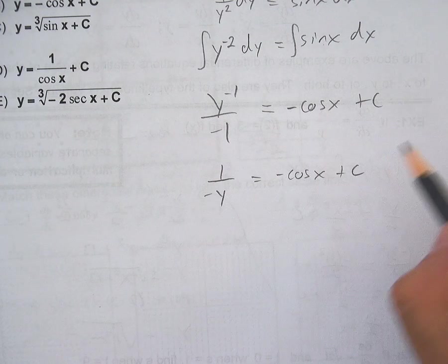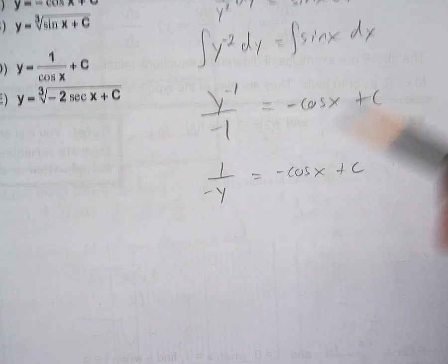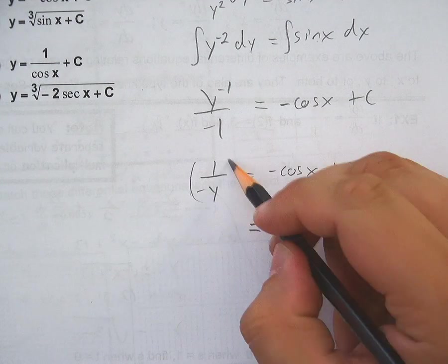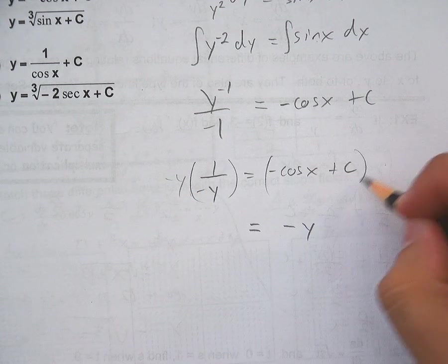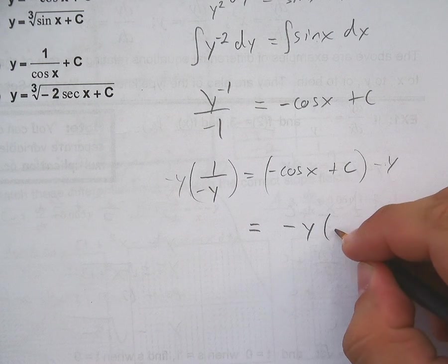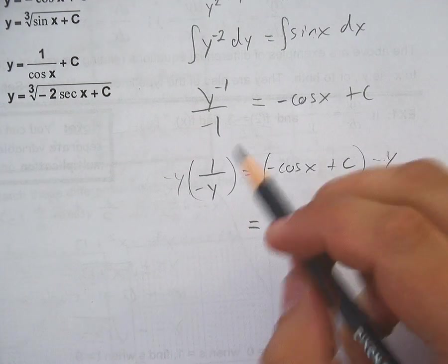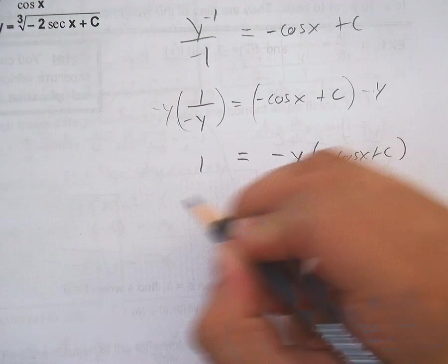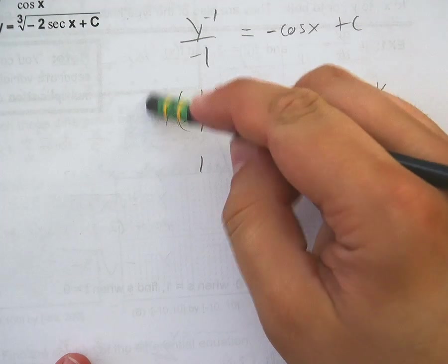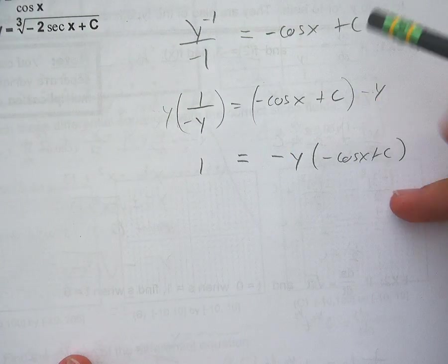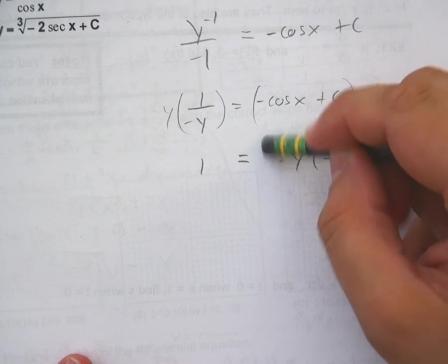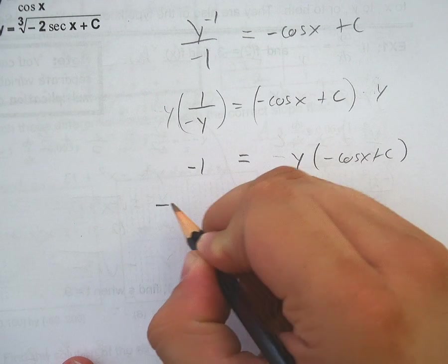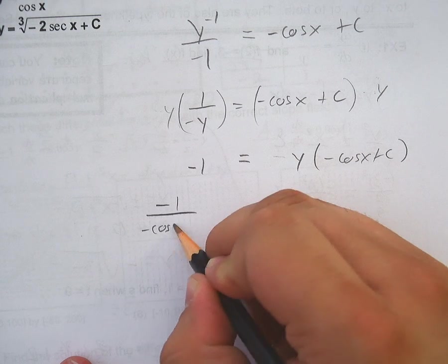So going on from here, you're going to end up multiplying y over here and dividing by this. So what it's going to end up being, when you multiply this side by your -y, you'll have -y times -cosine x plus c equals 1. And then divide this guy over there. You know what? Why would I do that? Let me just do the y and I'll leave this thing negative over here. So that'll give me -1 over -cosine x plus c.